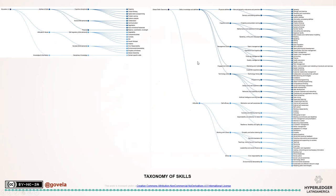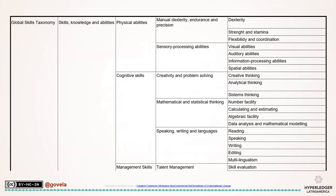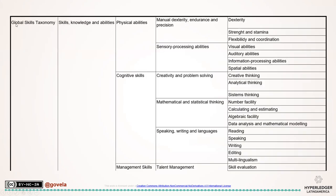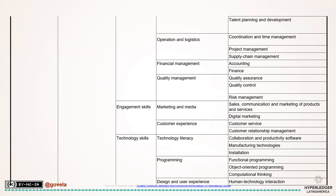Here we can see the taxonomy of skills. We have basically two things: Education 4.0 and the Global Skill Taxonomy. Under Education 4.0 we can see abilities and skills with subsections about cognitive abilities, analysis, problem solving, and system analysis. The Global Skill Taxonomy shows the same hierarchy of which skills fall under which category. We are making a table to group those things together.